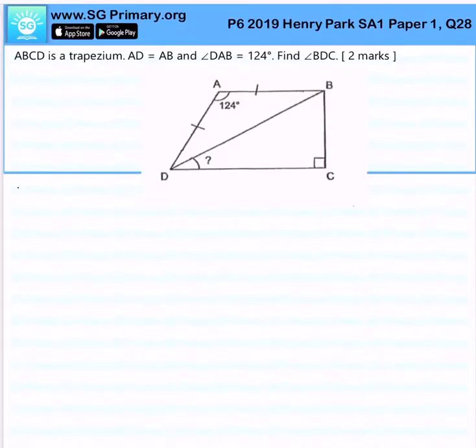ABCD is a trapezium. We have AD which equals AB, so this is an isosceles triangle. We are required to find angle BDC. A few things to note.